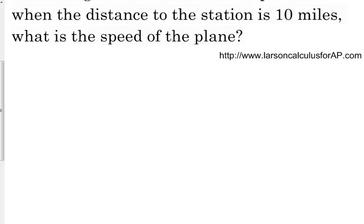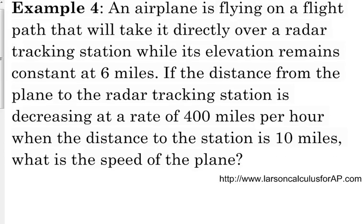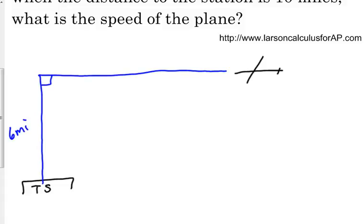Here's what we're looking at. We've got our little tracking station down here. We've got a plane. The plane is over here in the air, and this is about as good as my planes get. So it is flying towards this, but its elevation is remaining constant at 6 miles. So since that's remaining constant, I'm going to write that on my picture, and I don't have to change anything.